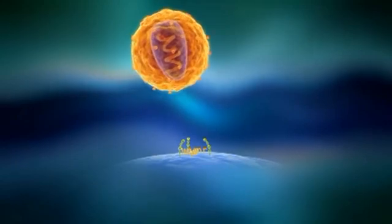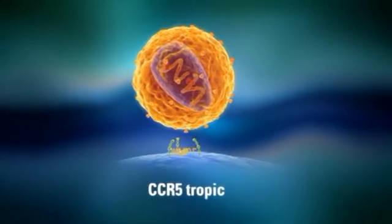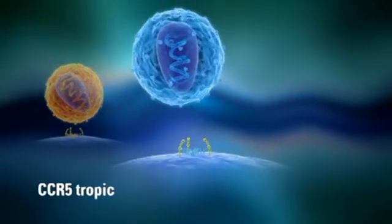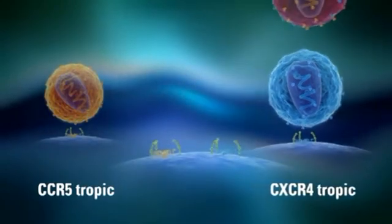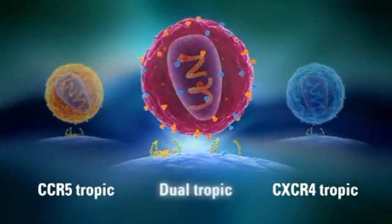Viruses that bind exclusively to CCR5 for cell entry are known as R5-tropic viruses. Viruses that bind exclusively to CXCR4 for cell entry are known as X4-tropic viruses. Viruses that utilize either co-receptor are known as dual-tropic viruses.